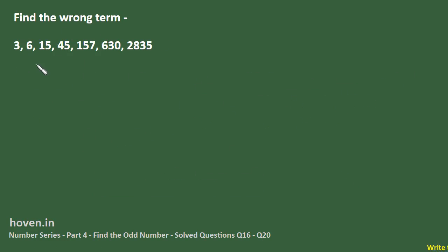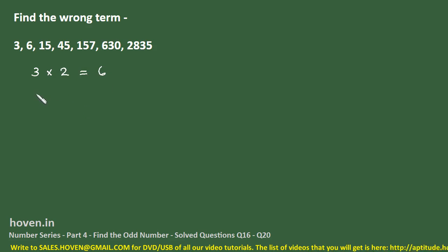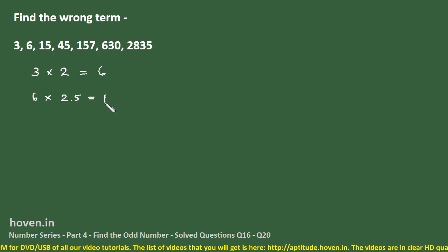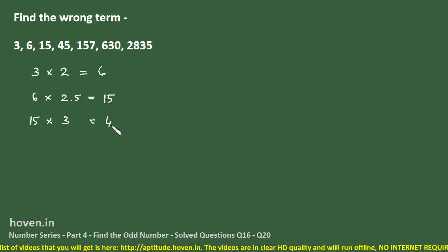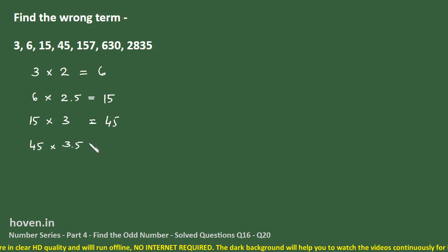Find the wrong term in this series: 3, 6, 15, 45, 157, 630, 2835. Let us see whether we can, but it is definitely a tough question. The idea may not occur at once. We know that 3 into 2 it gives me 6. And if I keep playing with numbers I can attempt this one to reach 15. From 15 I can see that I will multiply by 3 and I will get 45 which is my next number. So up to this there is some pattern, but we are not very confident.